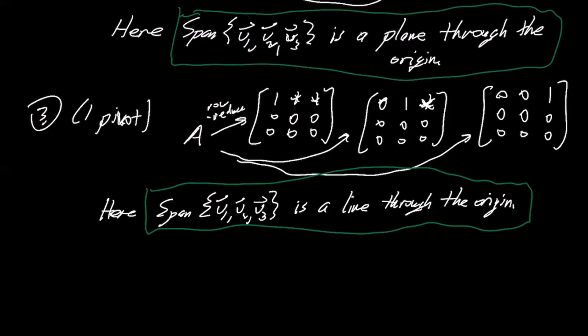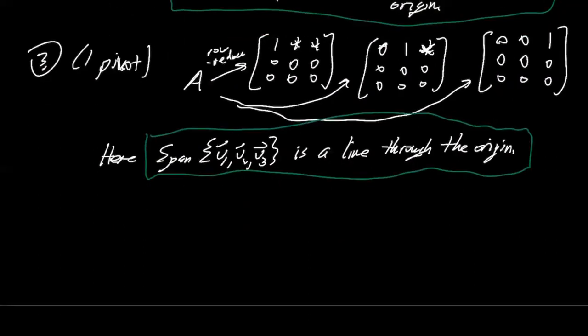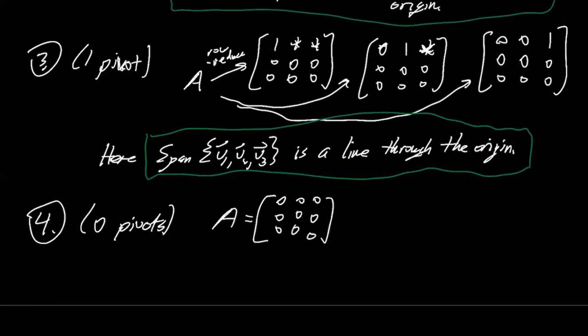Same reasoning as above, it has to go through the origin because zero is always a linear combination of any vector just by scaling them all down to zero. And there's one more case, which is if I give you the zero vector three times. There's no row reduction at all. I give you this matrix with all zeros and the span is just the zero vector.